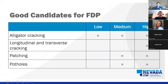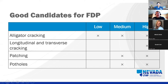Full depth patching candidates for asphalt pavements include alligator cracking at any severity level — low, medium, or high — since we typically recommend full depth patching for any alligator cracking. High severity longitudinal and transverse cracking — three-quarters of an inch wide or larger — also qualifies, as do previous patches that are failing, and medium or high severity potholes.